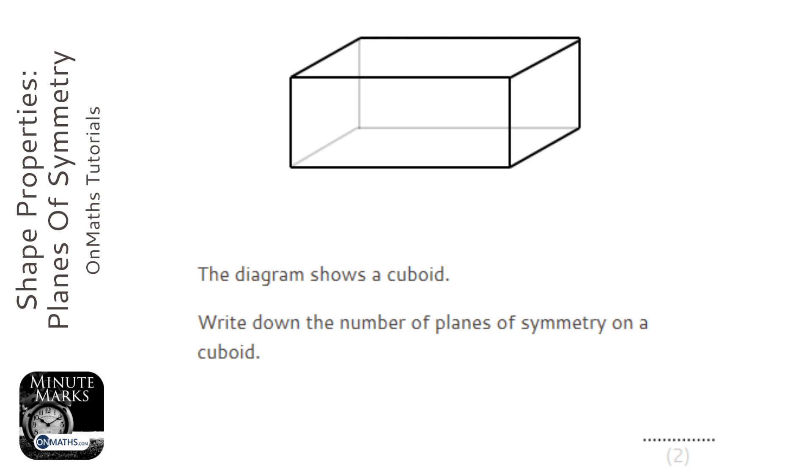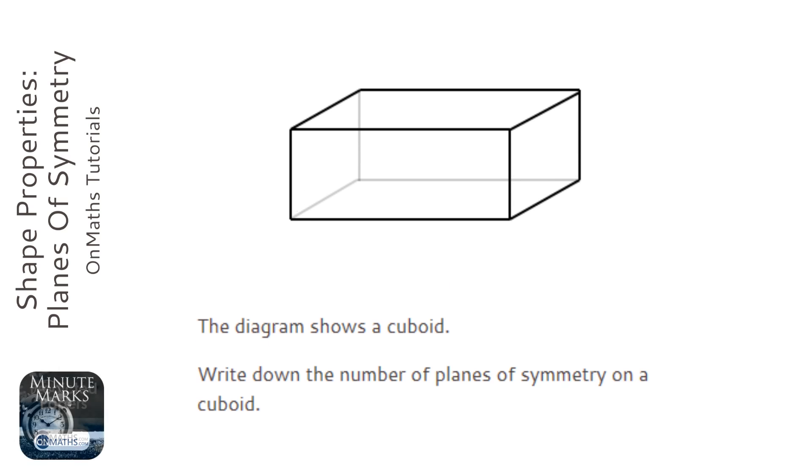Planes of symmetry are not the easiest thing to get your head around. It's basically like reflection lines or mirror lines for two-dimensional shapes, but for three-dimensional shapes, and it's somewhere that you can cut along the shape.